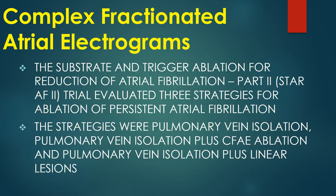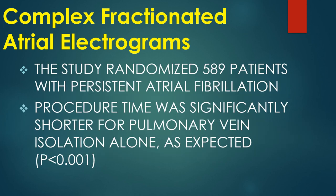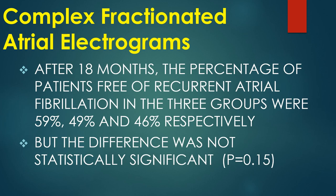The STAR-AF2 trial evaluated three strategies for ablation of persistent atrial fibrillation: pulmonary vein isolation alone, pulmonary vein isolation plus CFAE ablation, and pulmonary vein isolation plus linear lesions. The study randomized 589 patients with persistent AF. Procedure time was significantly shorter for pulmonary vein isolation alone. After 18 months, the percentage of patients free of recurrent AF was 59%, 49%, and 46% respectively, but the difference was not statistically significant.